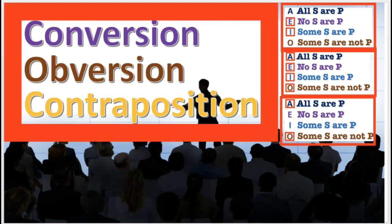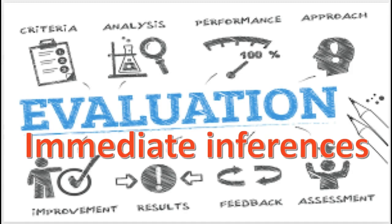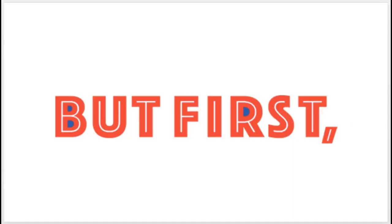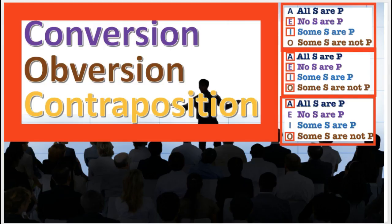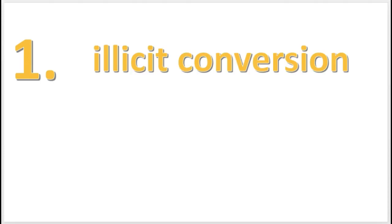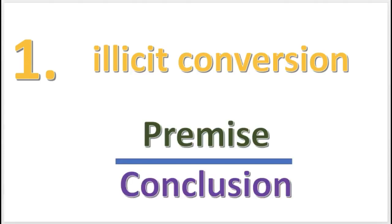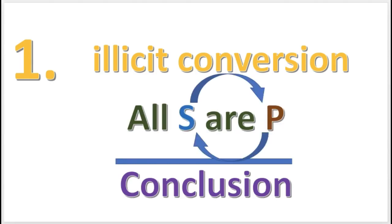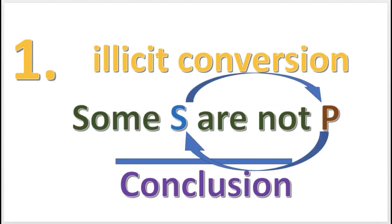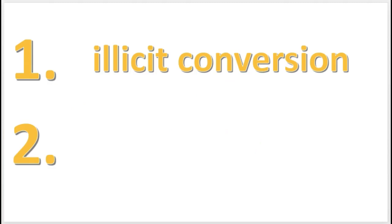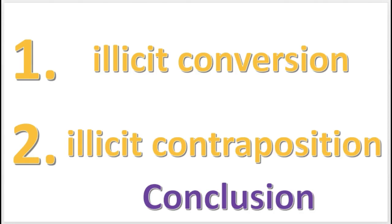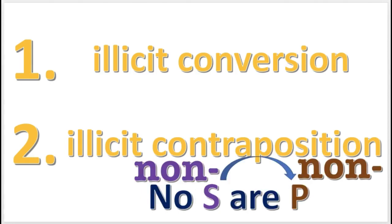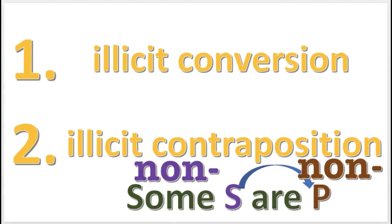These operations can be used to evaluate immediate inferences. But first, note there are two formal fallacies that can occur with these operations. One is called illicit conversion, and it's committed when a conclusion results from converting an A or an O premise. The second is called illicit contraposition, and it's committed when a conclusion results from contraposing an E or an I premise.